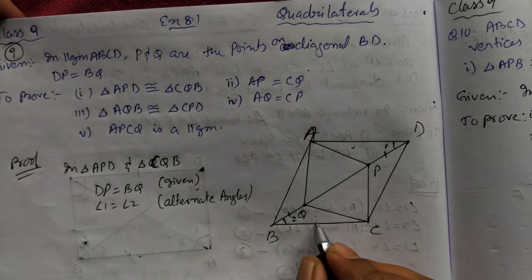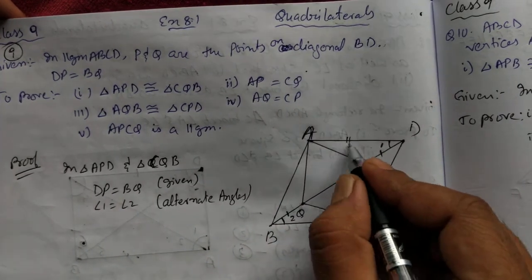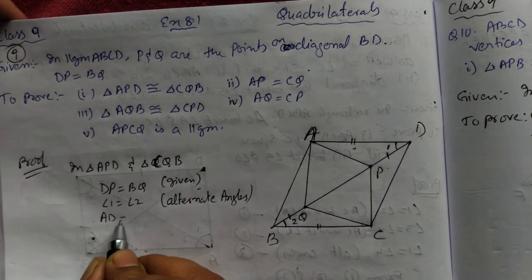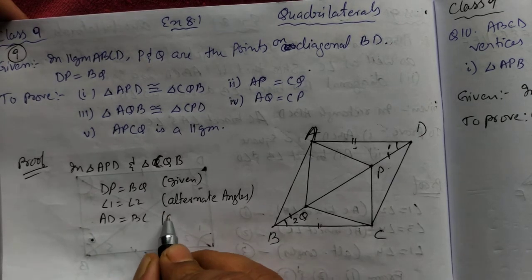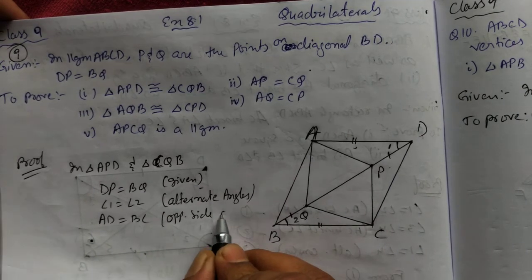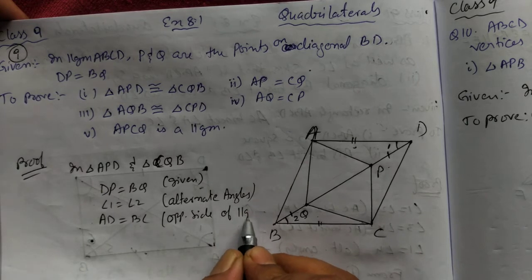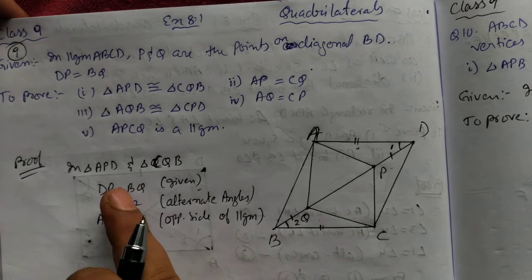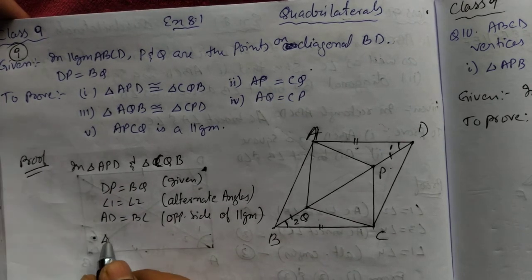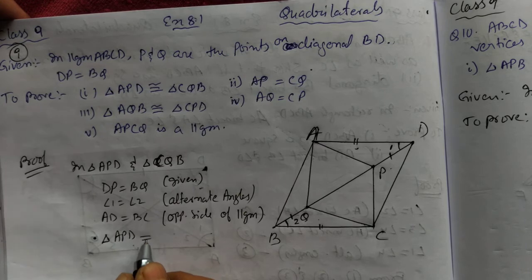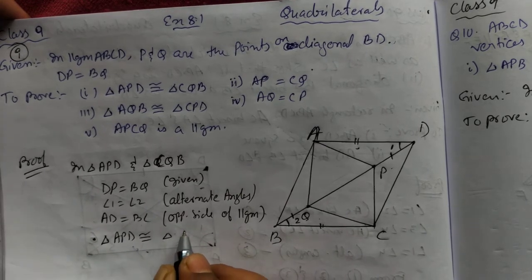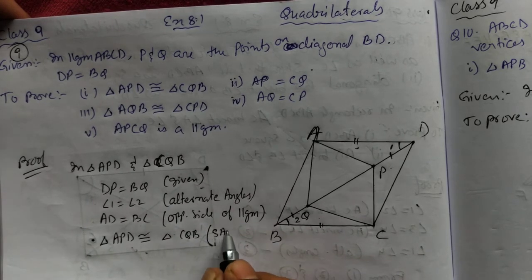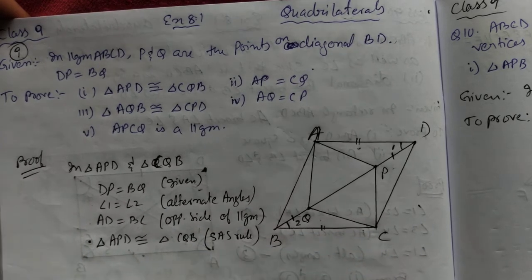Third point: these two sides are the same because they are opposite sides of a parallelogram. We can write AD equal to BC. Reason: opposite sides of parallelogram are always equal. So we got 3 points, that means the triangle is congruent. Triangle APD is congruent to triangle CQB by SAS rule. First proof is done.